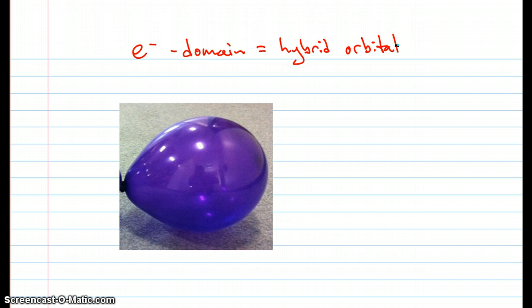We're going to be using this balloon to represent a single electron domain. So when you see a balloon like this, you'll want to imagine the central atom here, and then the bond axis will pass directly through the balloon, through the center of it, to the tip, where then you would find a peripheral atom or a lone pair.